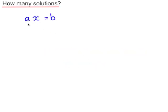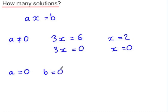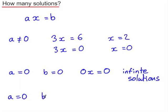How many solutions are there to the equation ax equals b? If a is not equal to zero, then for every value of b this equation has a single unique solution — for example, three x equals six gives x equals two, and three x equals zero gives x equals zero. However, if a is equal to zero, then depending on the value of b we may have no solutions or an infinite number of solutions. If b is also equal to zero, then x can be anything and we have infinite solutions. But if a is zero and b is not zero, there are no solutions.